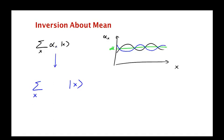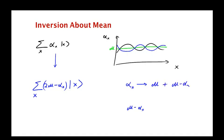Whatever the amplitude of x used to be — if it was below μ, you reflect it to be as much above μ as it used to be below. So the new amplitude is 2μ minus α_x. Why 2μ minus α_x? The difference between μ and α_x is μ minus α_x — that's how much below μ the amplitude is. You flip it: μ plus (μ minus α_x) equals 2μ minus α_x. That's the operator called inversion about the mean.